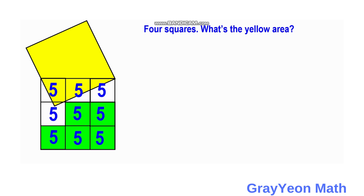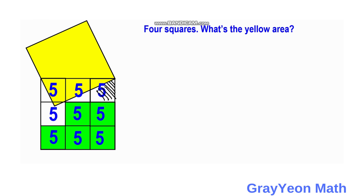Next, notice this white triangle near the yellow region and above the green region. The longer base spans two five-square-unit lengths, so it is 2√5, and the shorter leg is √5.